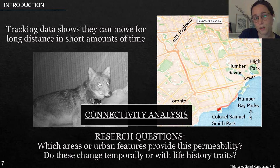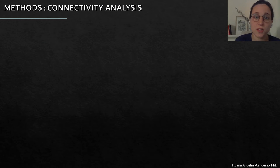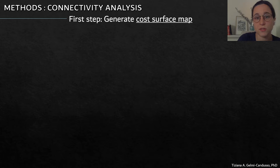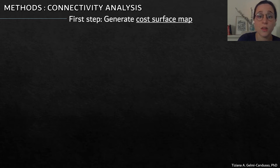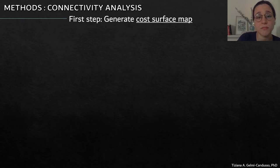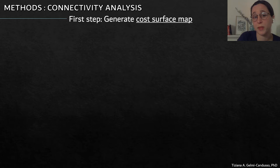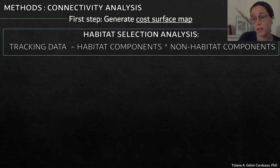To understand this, we do a connectivity analysis. To run a connectivity analysis, the first step is to generate a cost surface map, also known as a resistance layer. Each cell within the cost surface map has a resistance value that indicates how permeable the cell is to animal movement. To do this, you can use expert knowledge, but you can also do it mathematically using a habitat selection analysis, and that's exactly what we did.